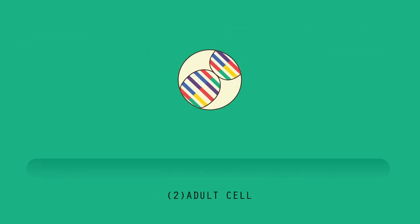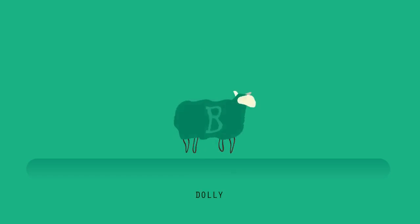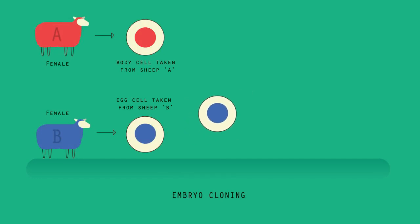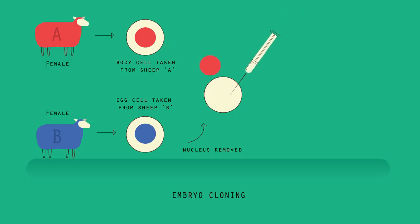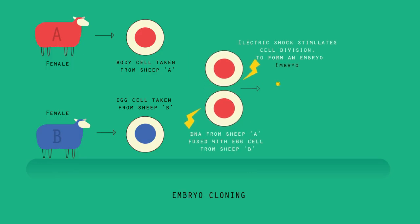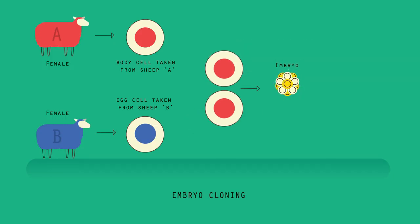There is a way to get around that problem, and that is to use another technique called adult cell cloning. This is used to form a clone of an adult animal. You might have heard of Dolly the sheep — she was the first mammal to be cloned, back in 1996. An unfertilized egg cell is taken from an adult female and its nucleus is removed. A body cell, such as a skin cell, is taken from a different adult, and its nucleus is removed and inserted into the egg cell. An electric shock then stimulates the egg cell to divide and form an embryo.